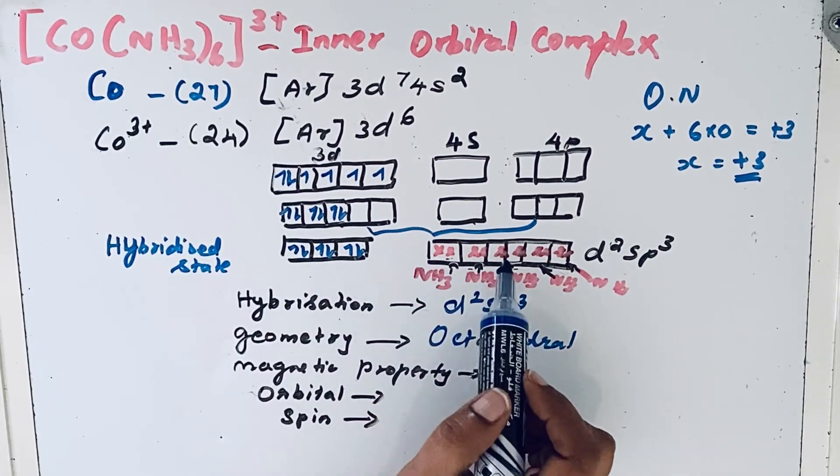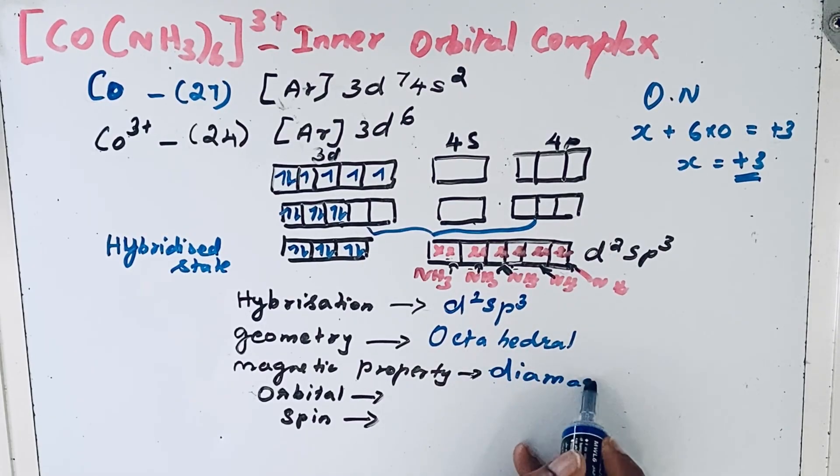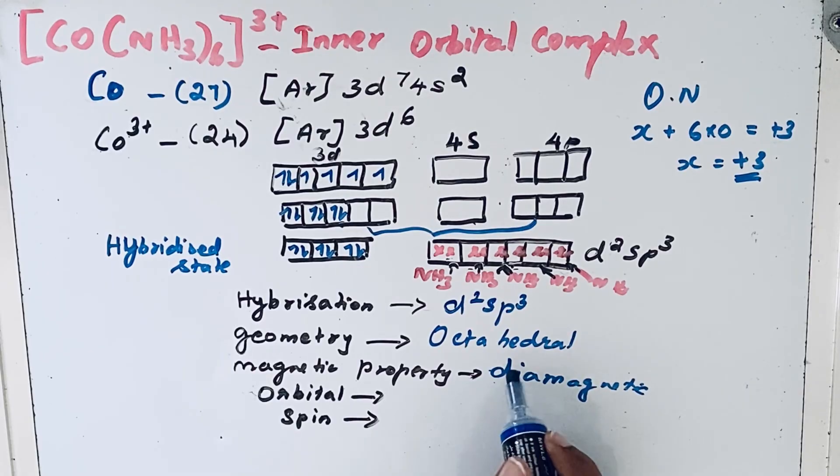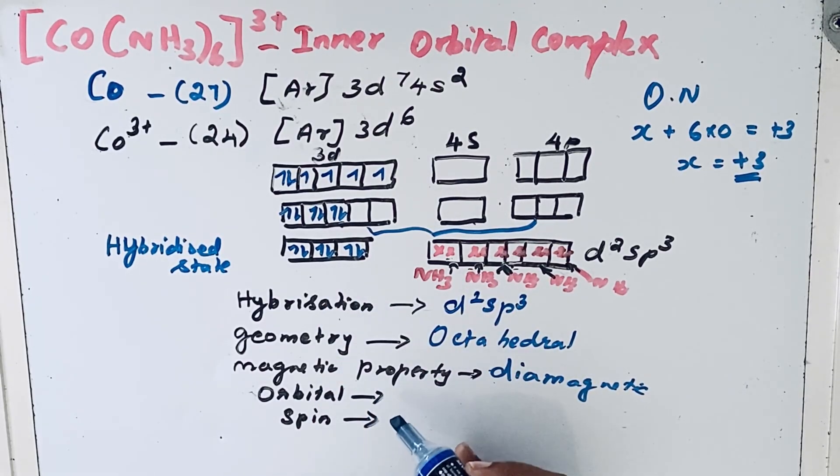Here you can see all of them are paired electrons, so it is diamagnetic. Diamagnetic means paired—all electrons are paired.